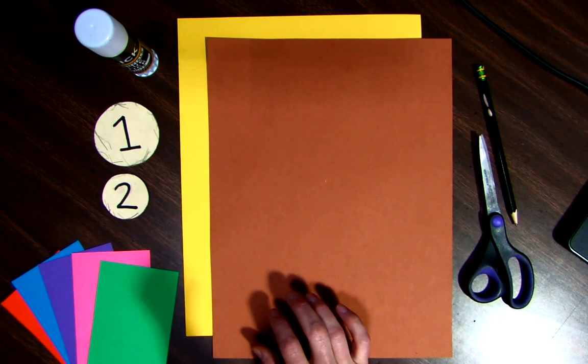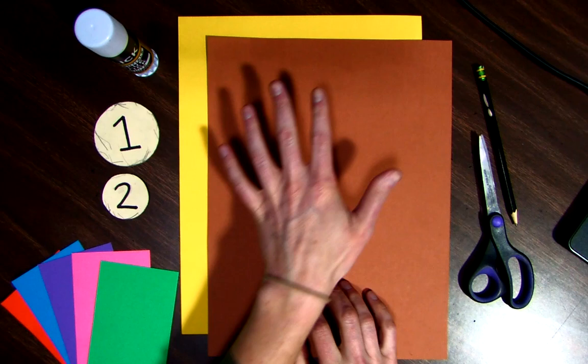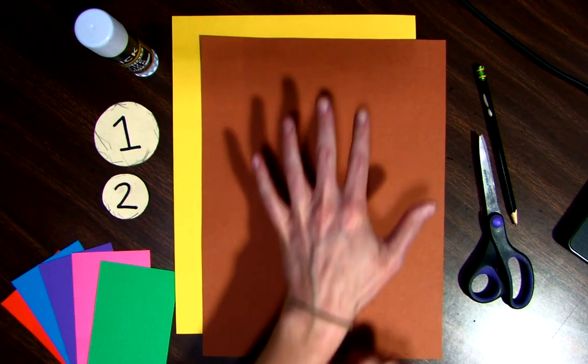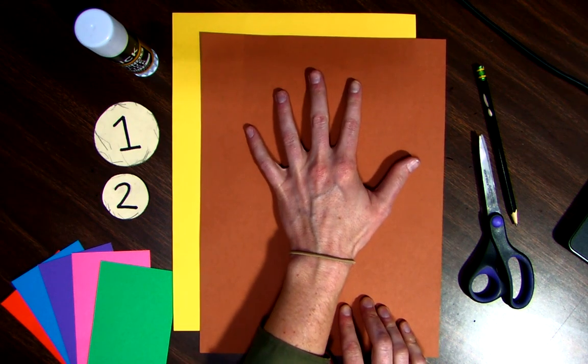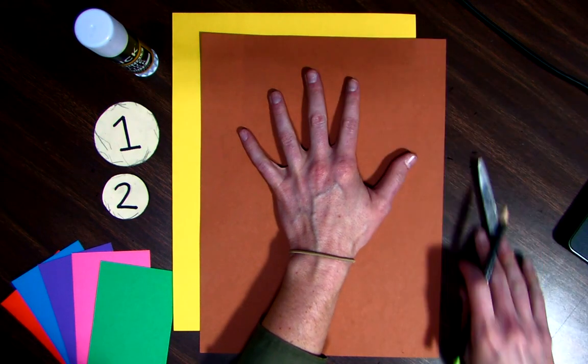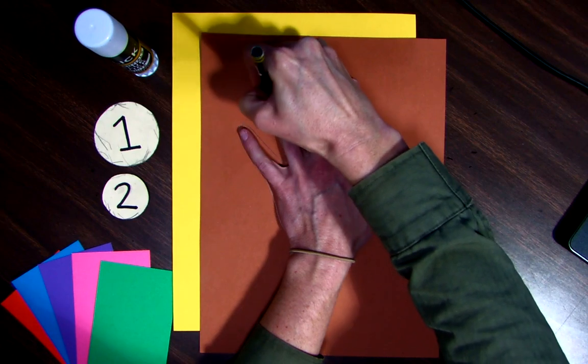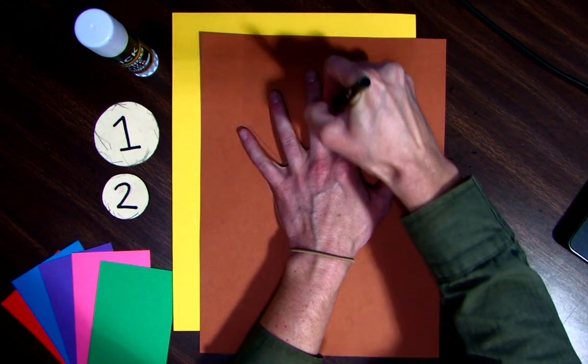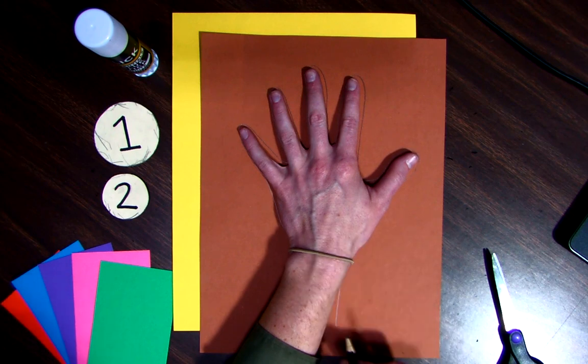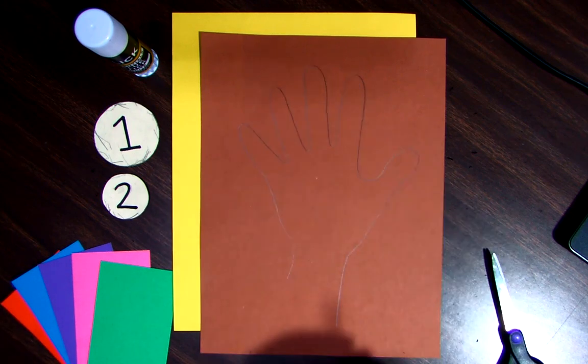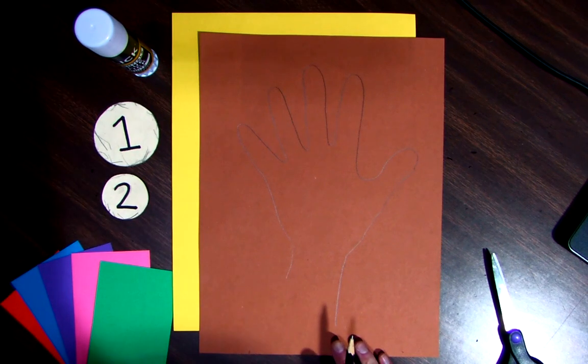The first thing we're going to do is trace our hand for our tree. Now my hand is going to be much bigger than your cute hands, but I'm going to lay my hand close to the top of my paper. We don't want to do it all the way down here because then we won't have a very long tree trunk. I'm going to take my pencil and I'm going to trace around my hand. It's okay if you leave some space so you're not right close up to your fingers here. And it's okay if it's not perfect. These are supposed to be branches.